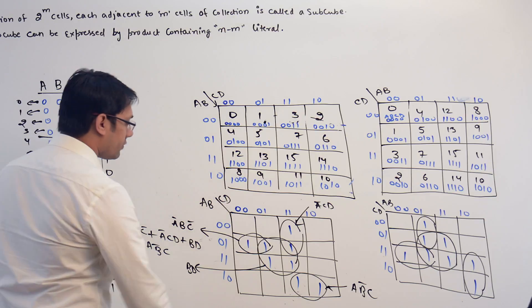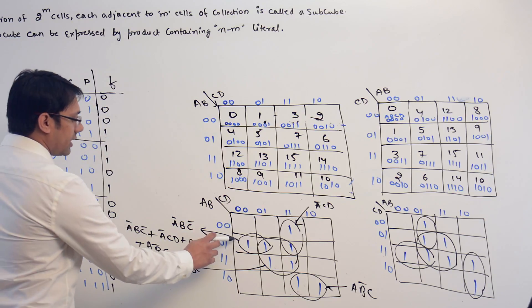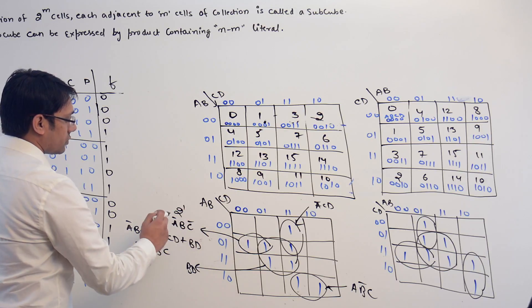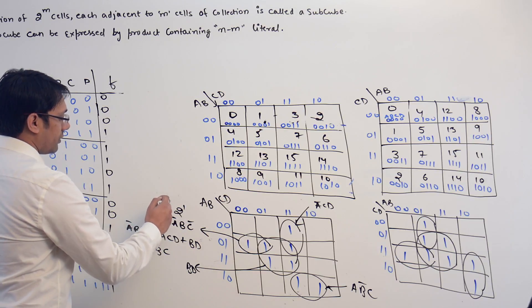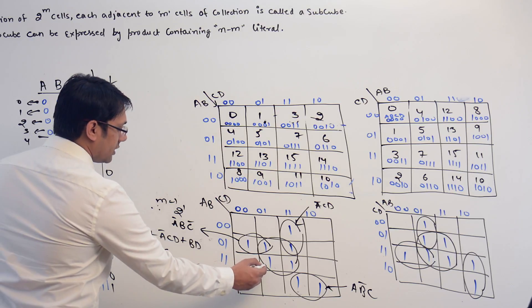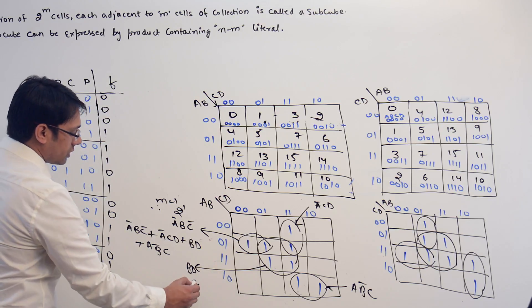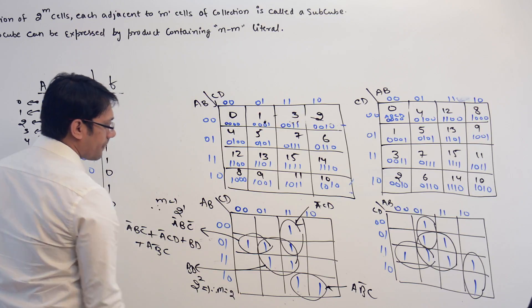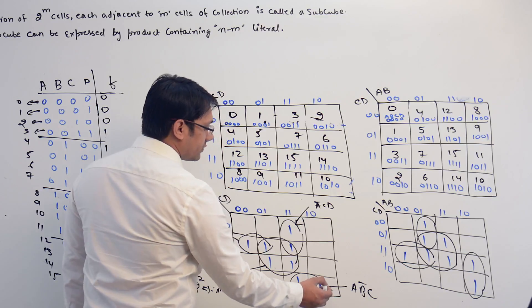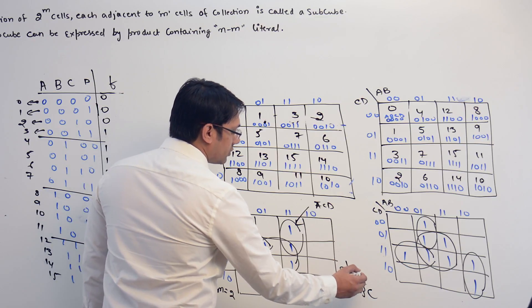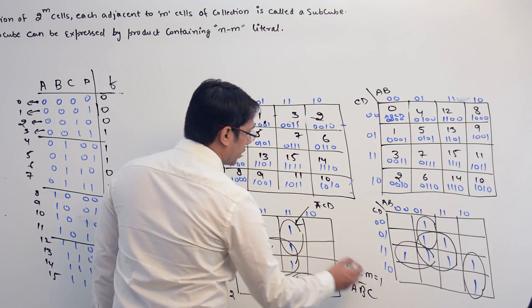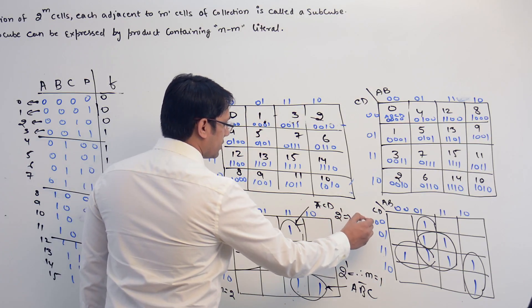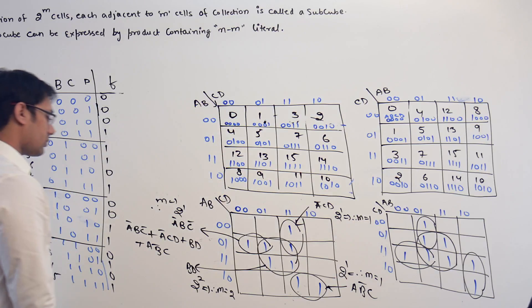The solution equation can be: A complement BC complement + A complement CD + BD + AB complement C. Now, for every subcube, the size of this subcube is 2, that is 2 raised to power 1, so the value of M is 1. For the next subcube, the size is 4, that is 2 raised to power 2, so M is 2. For the remaining subcubes, size is 2, so 2 raised to power 1, and M equals 1.